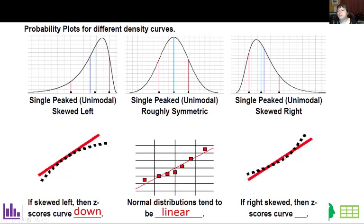If you're seeing curvature upward, that typically indicates the distribution is skewed right. To determine normality, create the probability plot using the z-scores for the percentiles of the values plotted against the actual x-values.